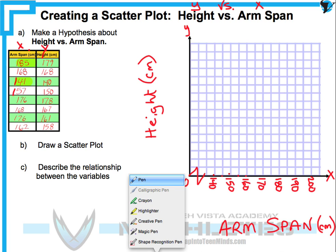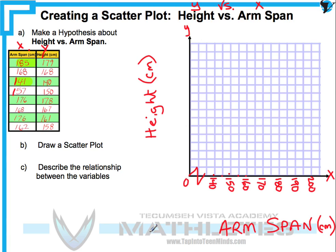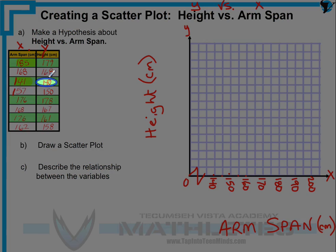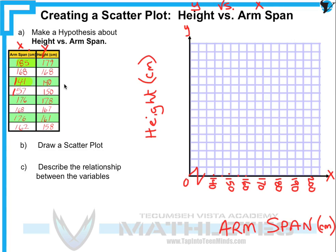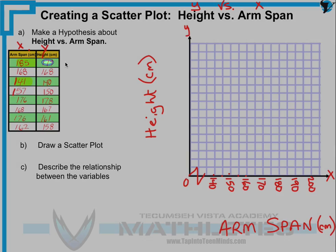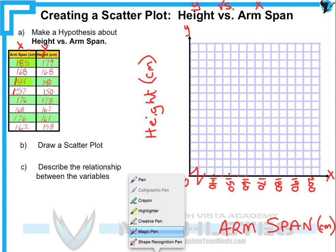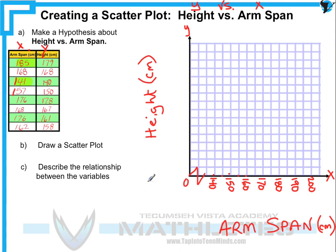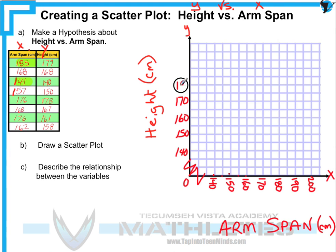When we look at the height column, the lowest is once again 140 and the highest looks like 179, so we're probably going to use a similar scale. We'll do another jump here, start at 140, and go up by fives, indicating every 10. We'll go all the way up to 200 centimeters and toss a title on there as well: height versus arm span.